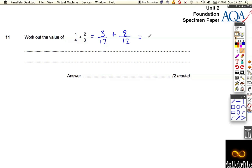Then, once we've got 3 out of 12 and 8 out of 12, we can just add them up and get the answer: 11 out of 12.